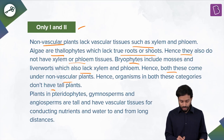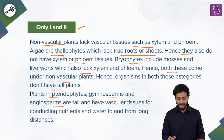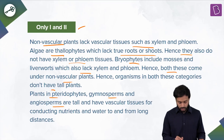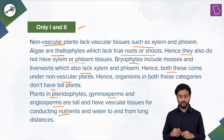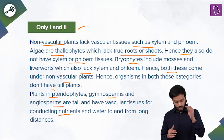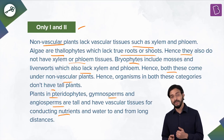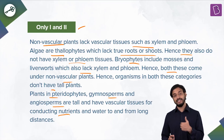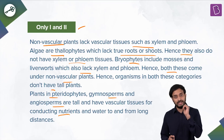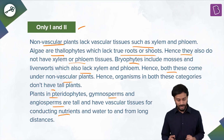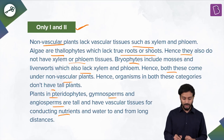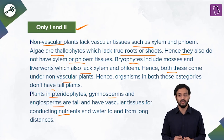Pteridophytes, gymnosperms, and angiosperms are tall and have vascular tissues for conducting nutrients and water to and from long distances. Do you understand the reason for being vascular and the reason plants are shorter in height? The correct answer is only one and two.